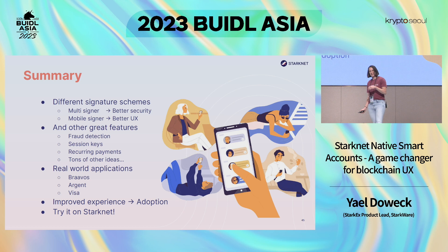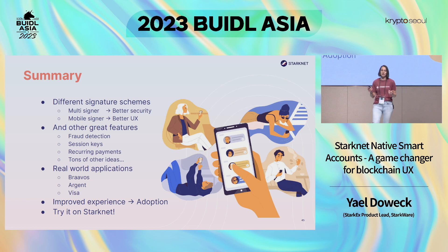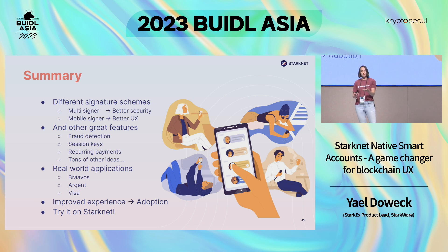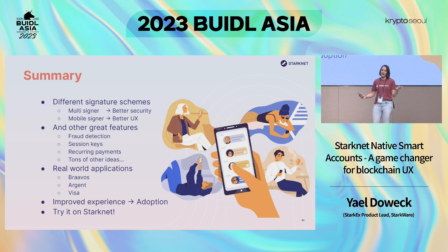To summarize, account abstraction is going to make a huge difference. It offers different signature schemes, multi-signer for better security, mobile signer for better UX, and other great features like fraud detection, session keys, recurring payments, and many other ideas. I showed you three real-world applications — Braavos, Argent, and Visa — that demonstrate this is practical and useful right now. All of this will bring an improved blockchain experience and eventually wider adoption. I invite you all to try it on StarkNet, and if you do, please contact me and let me know how it was. Thank you.